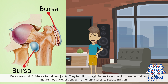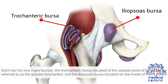They function as a gliding surface, allowing muscles and tendons to move smoothly over bone and other structures to reduce friction. Each hip has two major bursae: the trochanteric bursa, located at the outside point of the hip bone, and the iliopsoas bursa, located on the inside of the hip area.